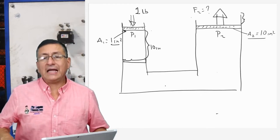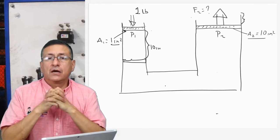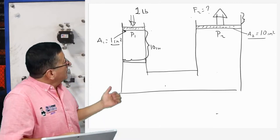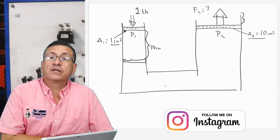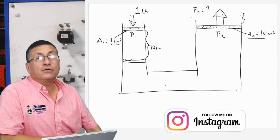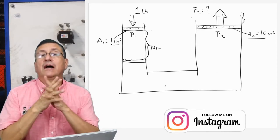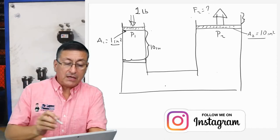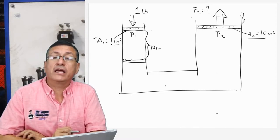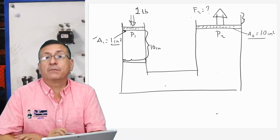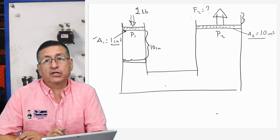Suppose that you have a closed container with two cylinders. In the left side of your screen is the cylinder with a small diameter. In the right side, you have the cylinder with a bigger diameter. In the left side, we have a cylinder with a piston. The area of piston number one is one square inch. The area of piston number two, the bigger piston, is ten square inches.